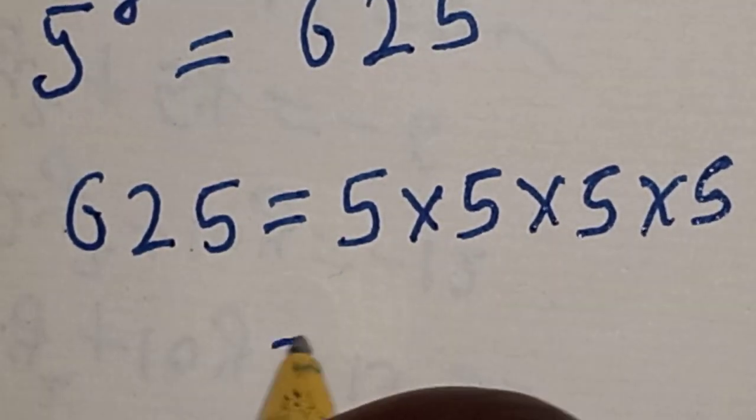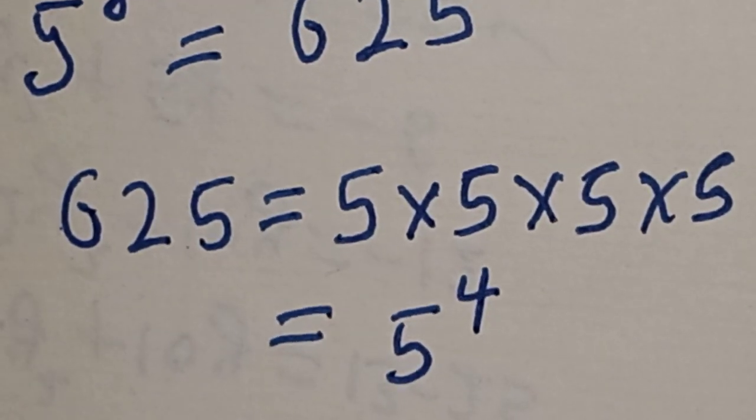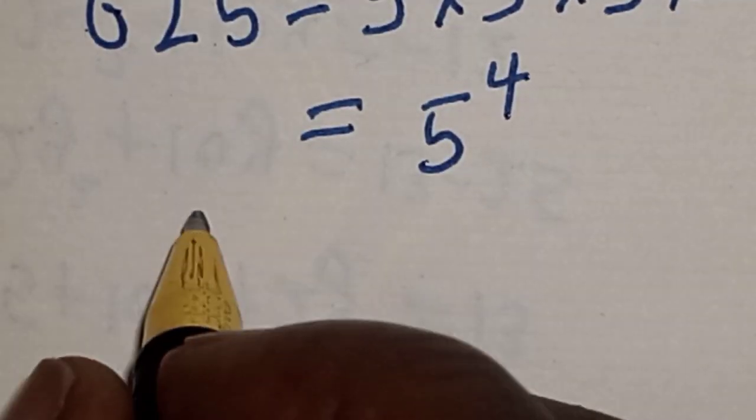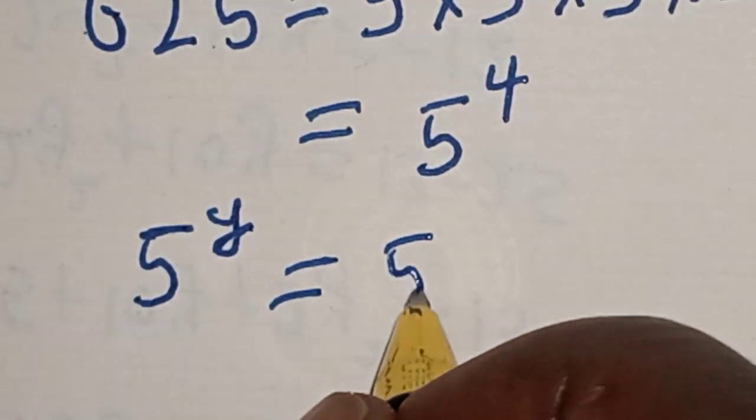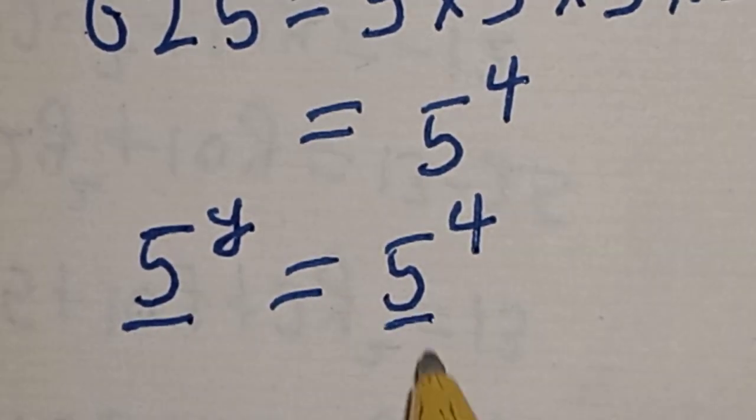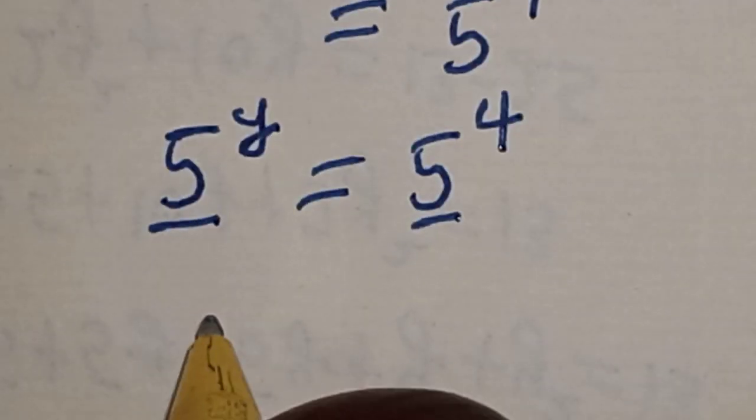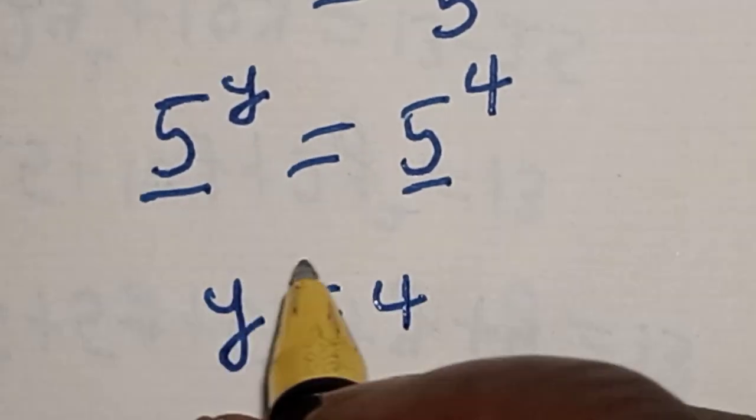Then this is equal to 5 raised to power 4. 5 raised to power y is equal to 5 raised to power 4. They have the same base 5, then we work with exponents. y is equal to 4, that is our final answer.